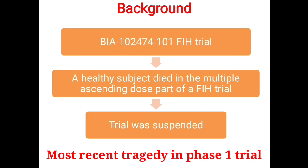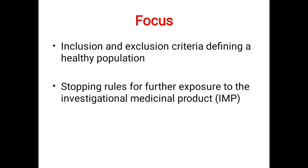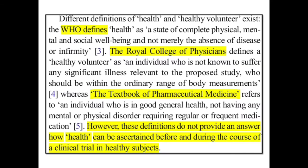Because of this issue, the trial was suspended. After this tragedy, many discussions took place and it was decided that there should be a focus on stopping rules in clinical trials, because if there were adequate stopping rules, this tragedy could have been prevented. It was also decided that there is a need for inclusion and exclusion criteria which will define a healthy population. With this focus, a consensus was developed, which we will see in the subsequent slides.